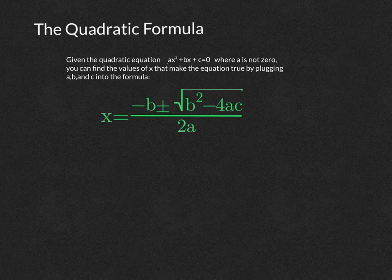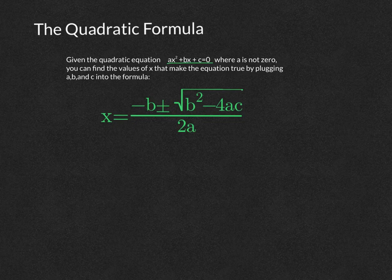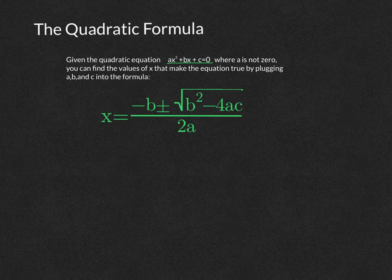The quadratic formula is a very special, very important formula that we use to solve the x values of a quadratic equation. Given the quadratic equation ax squared plus bx plus c, where a cannot be zero, you can find the values of x that make the equation true by plugging a, b, and c into this formula.